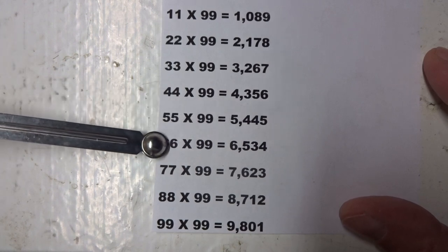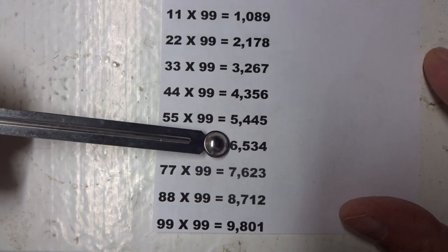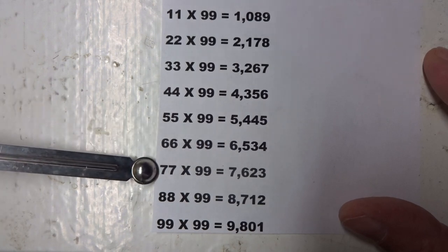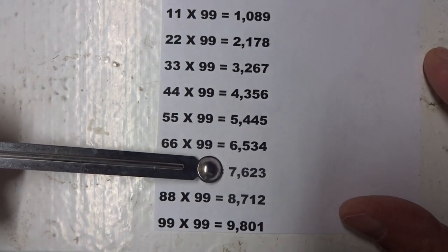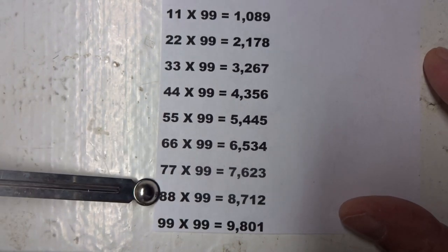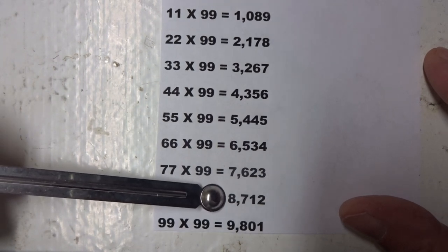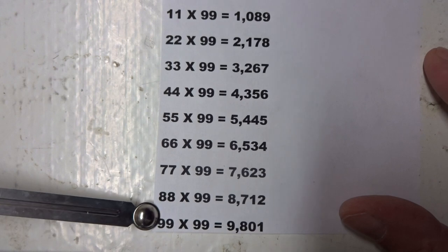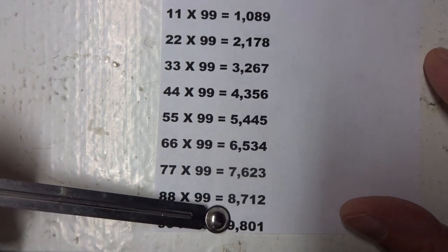Sixty-six times ninety-nine equals six thousand five hundred thirty-four. Seventy-seven times ninety-nine equals seven thousand six hundred twenty-three. Eighty-eight times ninety-nine equals eight thousand seven hundred twelve. Ninety-nine times ninety-nine equals nine thousand eight hundred one.